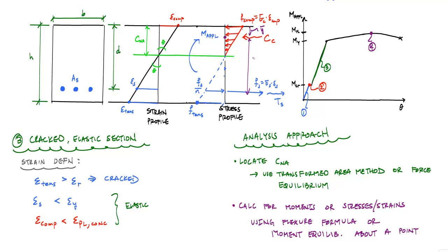which we'll call the arm, would just be z, which is d minus y-bar. Then you can sum moments about this point and solve for the applied moment M associated with the strain. Or you can use this moment equilibrium equation to go back to stresses and strains.